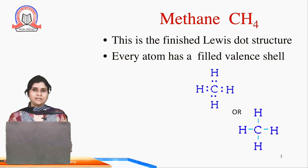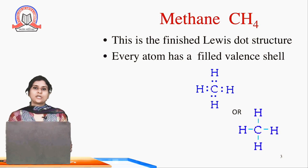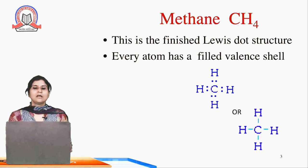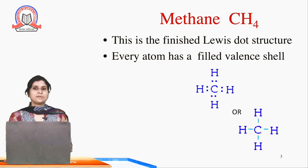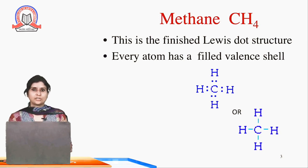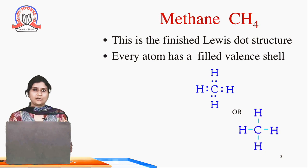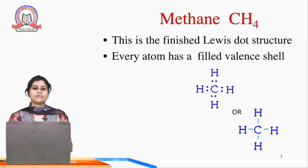First example, let's take methane, that is CH4. This is the finished Lewis dot structure. Every atom has a filled valence shell. In this Lewis dot structure of methane, we can see the carbon atom is surrounded by 4 valence electrons shown by the dots. Each valence electron is satisfied with 1 more electron from a hydrogen atom, so 4 hydrogen atoms are sharing their electrons with the 4 valence electrons of carbon.